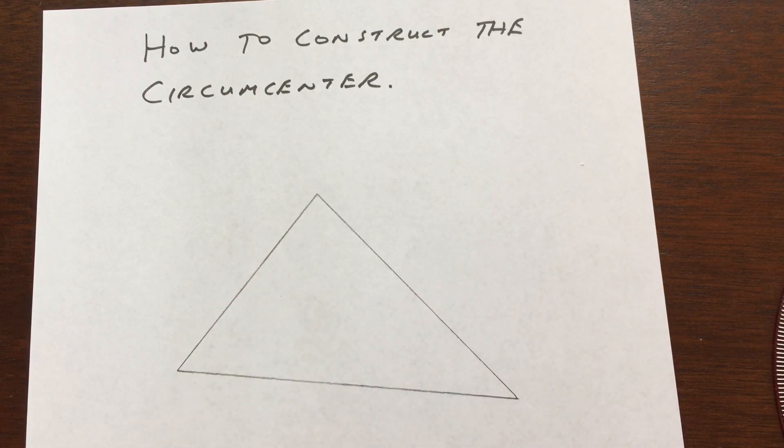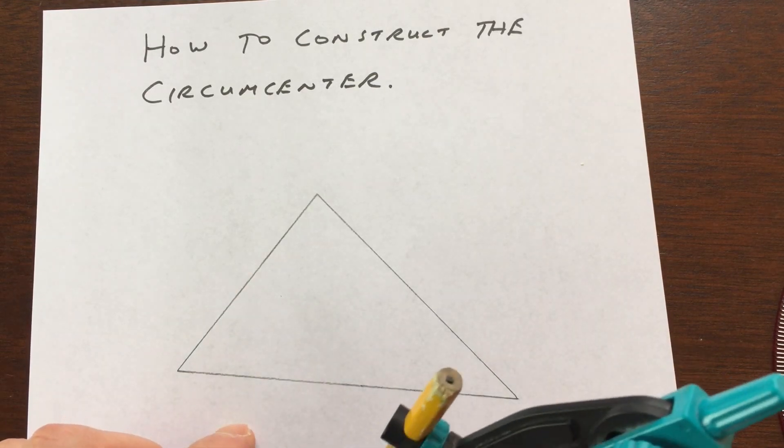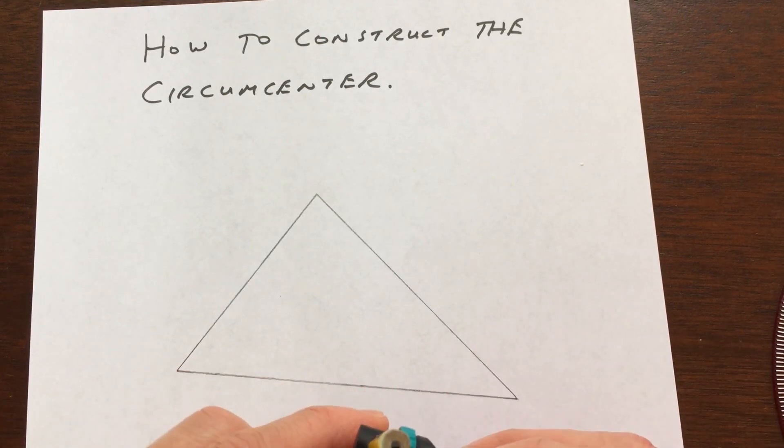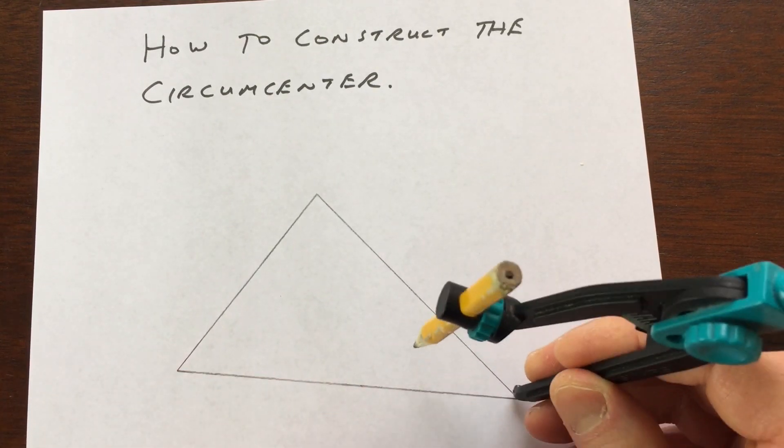Let me see if I can walk you through the construction. We don't have to do all three. If you just do two of the sides, that'll be enough to find the point of concurrency. So let me go ahead and show you.